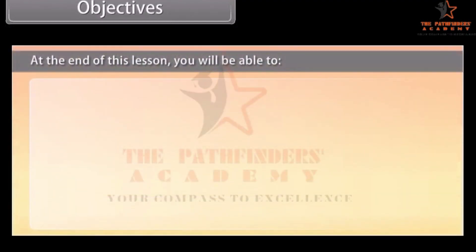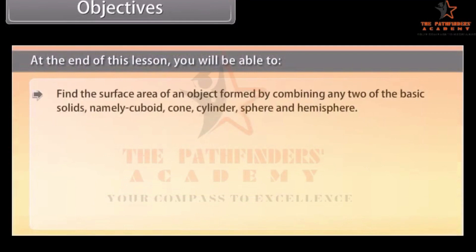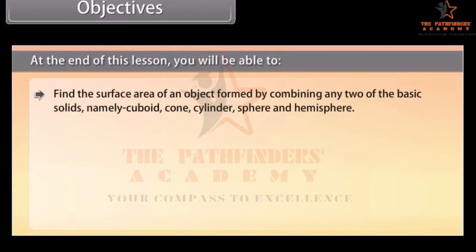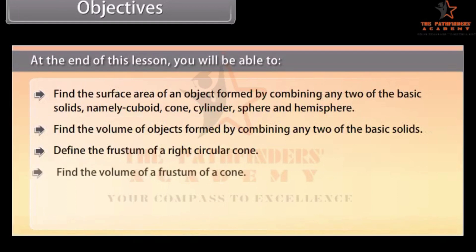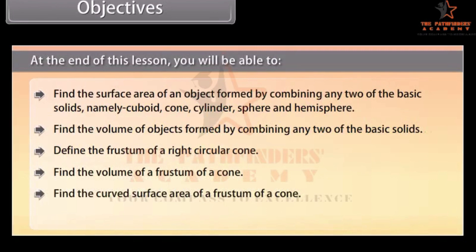At the end of this lesson, you'll be able to find the surface area of an object formed by combining any two of the basic solids — namely cuboid, cone, cylinder, sphere and hemisphere. Find the volume of objects formed by combining any two of the basic solids. Define the frustum of a right circular cone. Find the volume, curved surface area, and total surface area of a frustum of a cone.